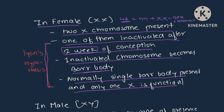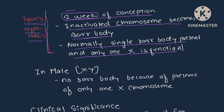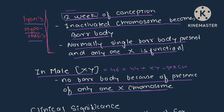This is Lyon's hypothesis. In males, there are 46 chromosomes, out of which 44 are autosomes and X and Y are the sex chromosomes. No bar body is present in males due to the presence of only one X chromosome.